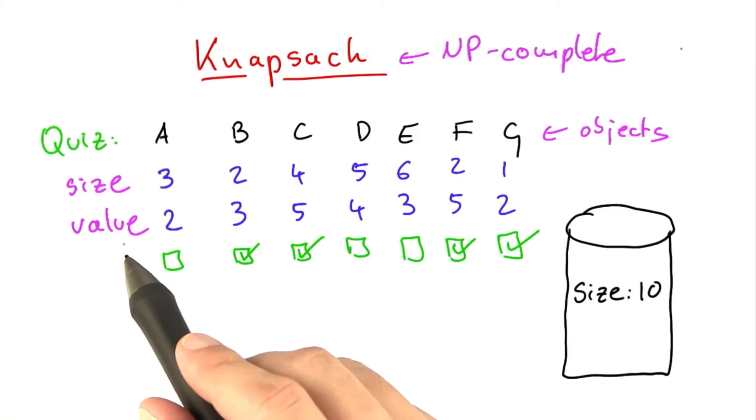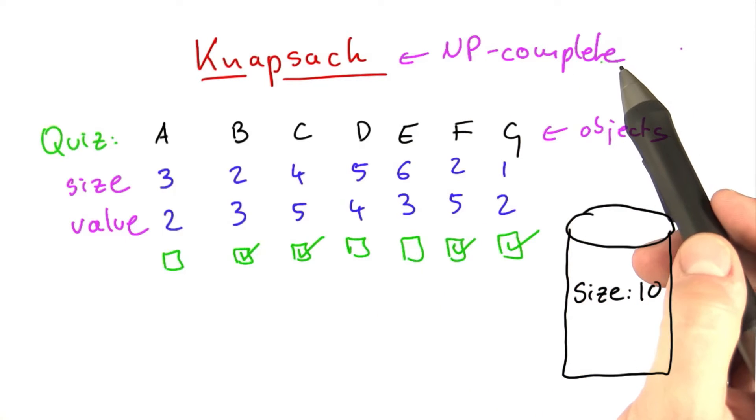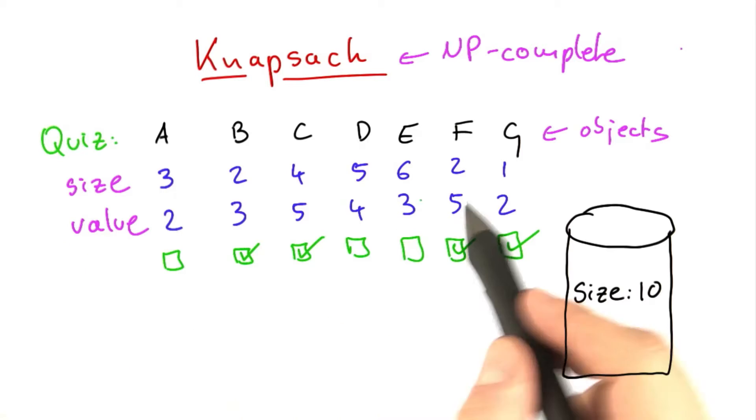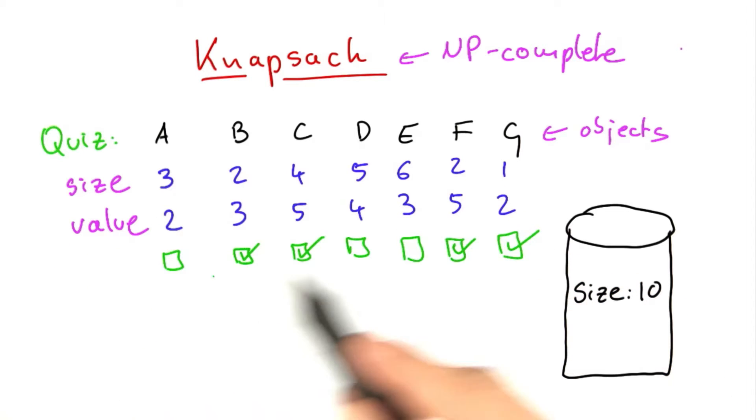Now, I've chosen the sizes and values so that this is not that difficult for you to figure out, even though it is an NP-complete problem in the general case. I suppose you have seen that there's lots of objects here which have a comparably small size and a very large value.